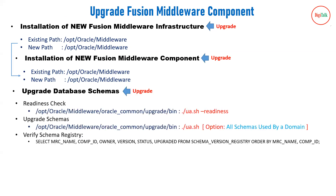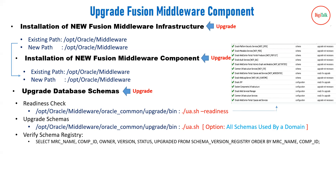After installing new binaries, you upgrade your database schemas. Before doing so, you can run a readiness check using the ua.sh command with the readiness option. This generates a report indicating whether your domain and components are ready for upgrade. You can run it any number of times without impacting production. It helps you identify and fix issues before the actual upgrade. Then to upgrade schemas, run ua.sh without the readiness option and provide your database schema details.